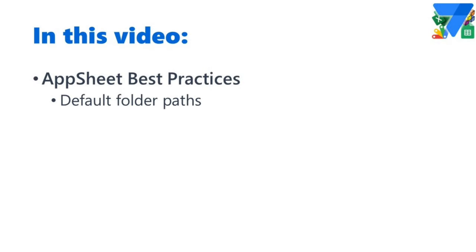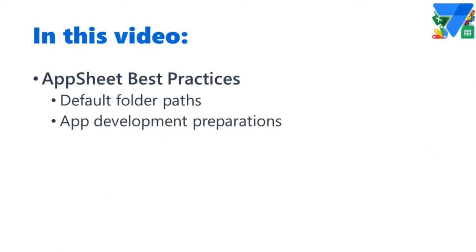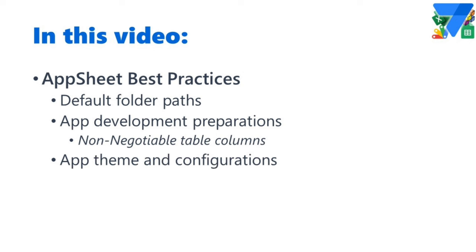If you are using AppSheet to automate your business processes in 2023, there are a few best practices you should know. In this video, we will talk about setting the default folder paths for your projects, preparing your backend tables with non-negotiable columns, designing your app team and other configurations, and using available app security controls.